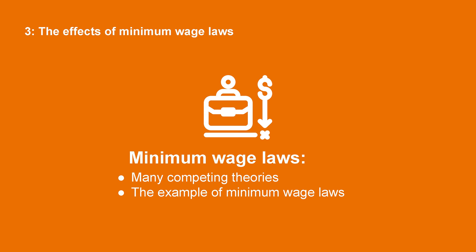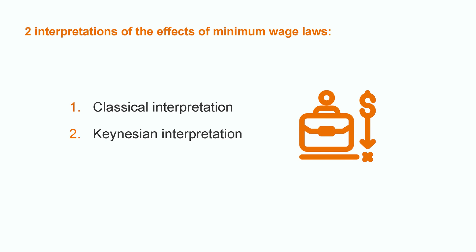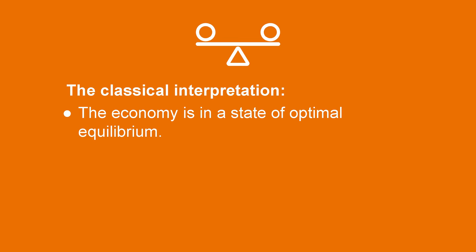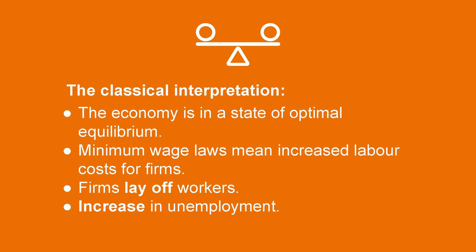Let's look at the effect of a possible policy: minimum wage laws. Minimum wage laws fix a floor to wages. For instance, in the US it is $7.25 per hour. This is a common policy in many developed countries, but its effects are very debated. We propose two major streams of interpretation. In classical analysis, the economy is in a state of optimal equilibrium — demand and supply are at their optimal levels. Minimum wage laws mean increased labour costs for firms. As a consequence, firms lay off workers, which leads to an increase in unemployment.